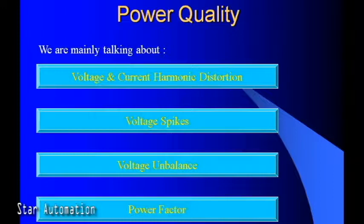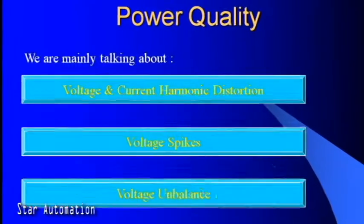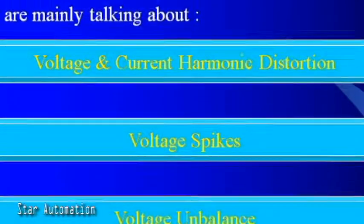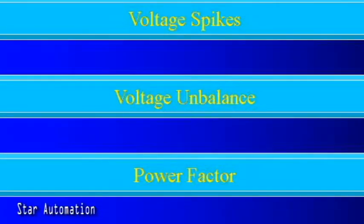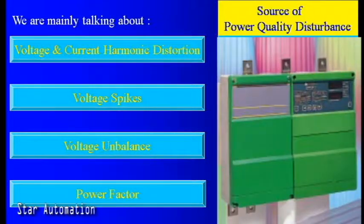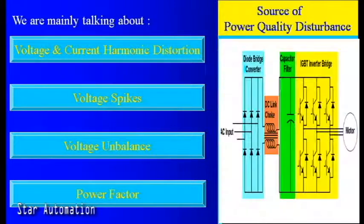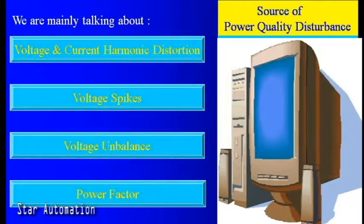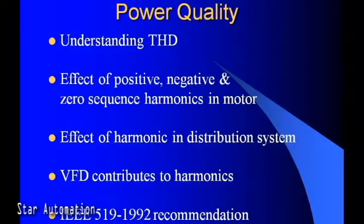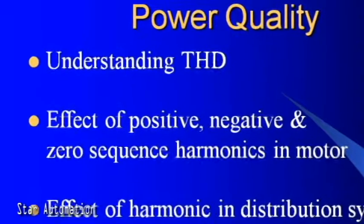Power quality is one of the major factors behind motor problems. In power quality, we will mainly talk about voltage and current harmonic distortion, voltage spikes, voltage unbalance, and power factor. Sources of power quality disturbance are AC drives, DC drives, industrial furnaces, switching circuits, computers, UPS, and all nonlinear loads.